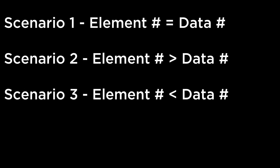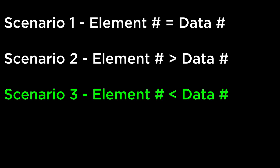Update data function. When we do a data join on a selection that already contains existing elements, we have three scenarios. In scenario one, we have an equal number of existing elements and data elements to be bound. In scenario two, we have more existing elements than data elements. In scenario three, we have fewer existing elements than data elements. In this video, we will always have an equal number of existing and data elements, so we will be in scenario one.